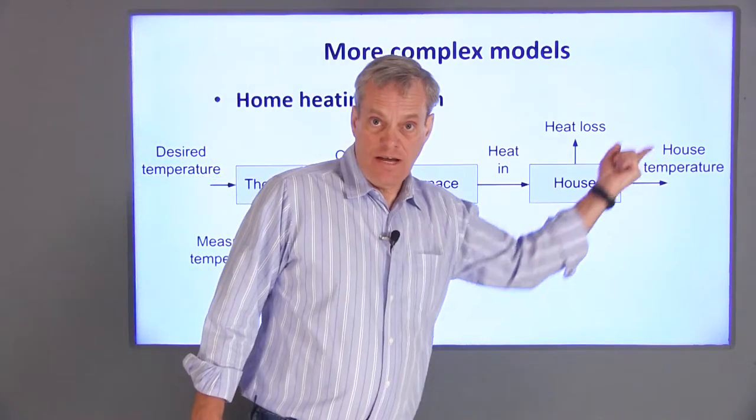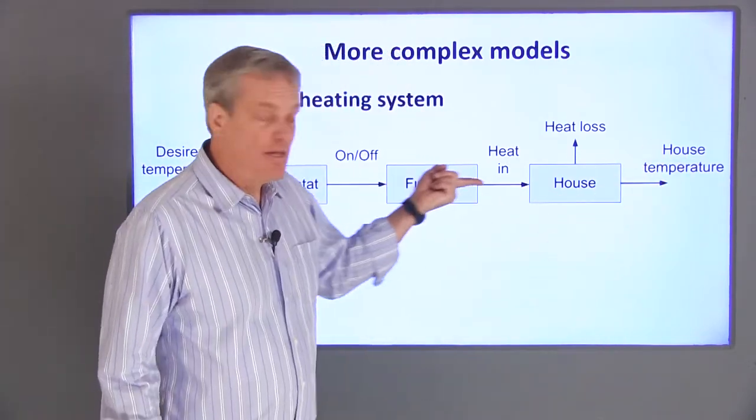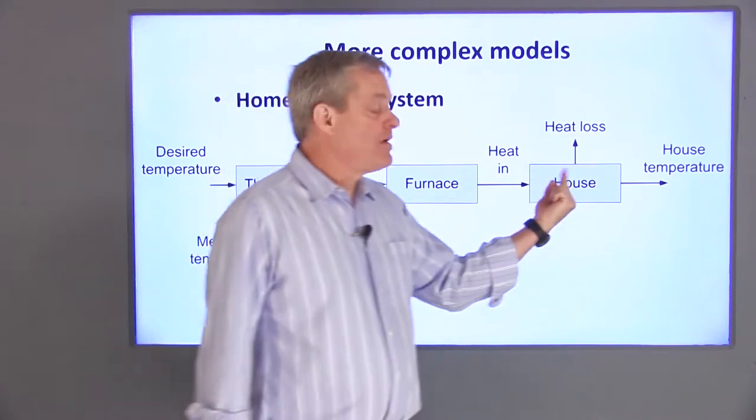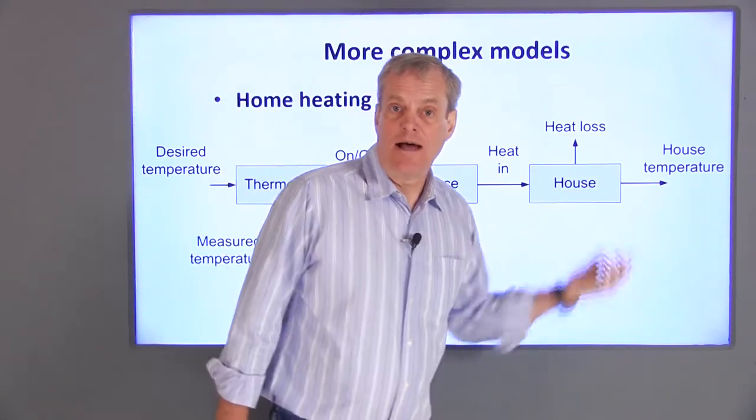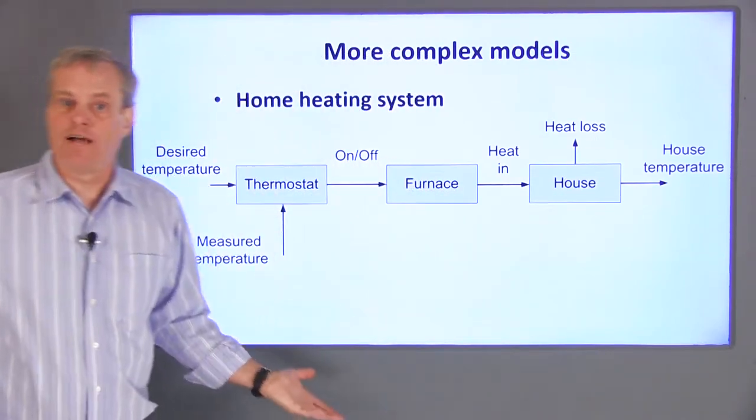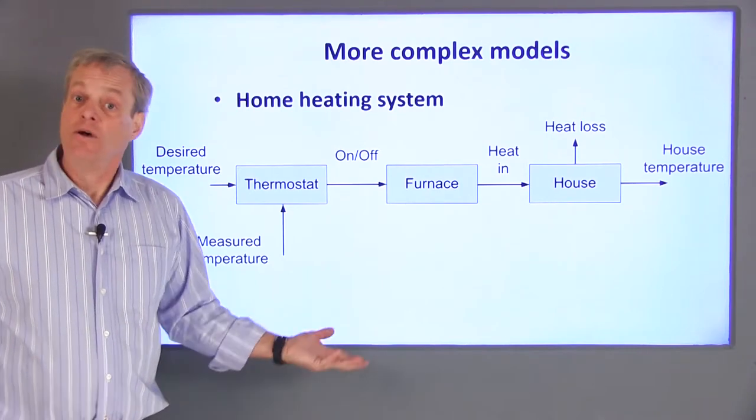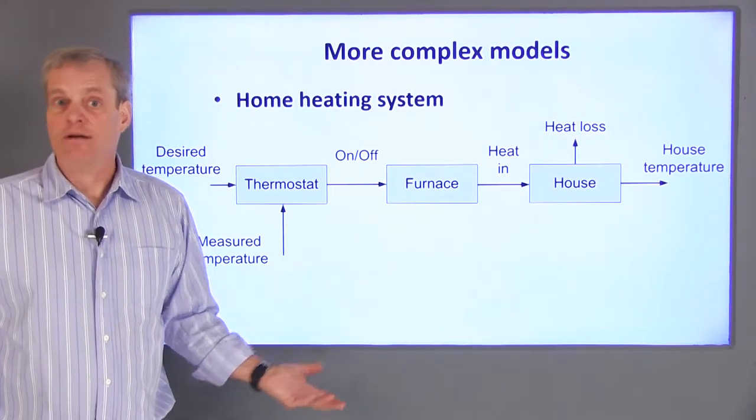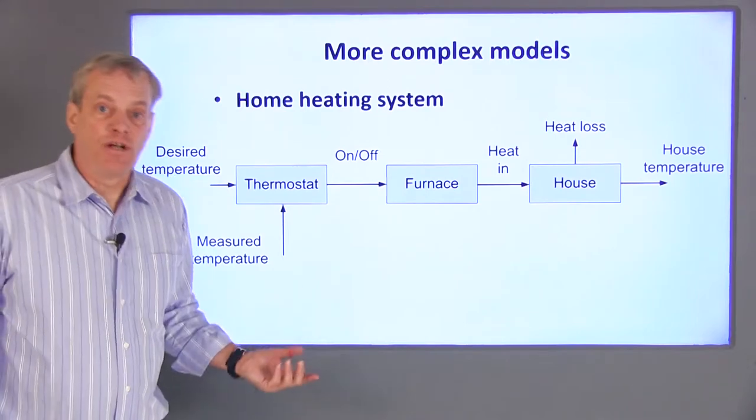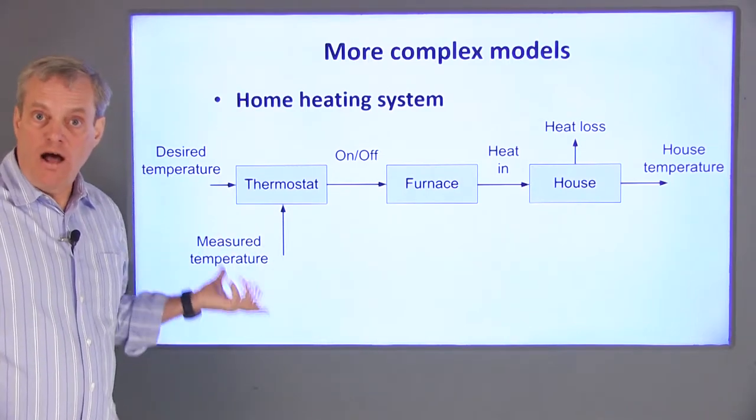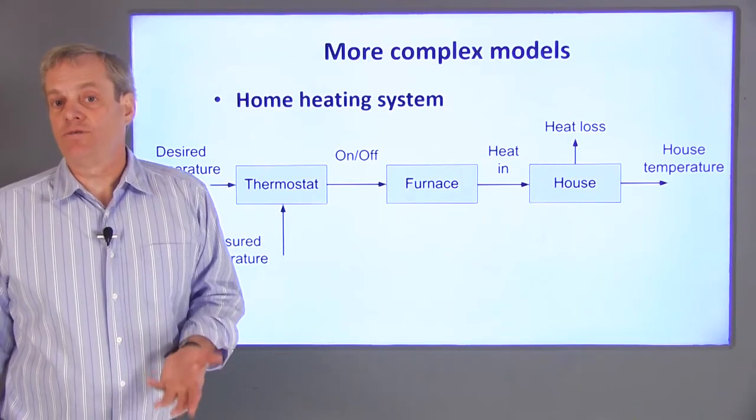The actual house temperature depends not only on the heat input from the furnace, but also the rate at which heat is leaving the house. An older, drafty house will lose heat rapidly, while a newer, well-insulated house will lose heat slowly. We may want to base our decision on how quickly to turn heat on or off on the rate at which the house loses heat.